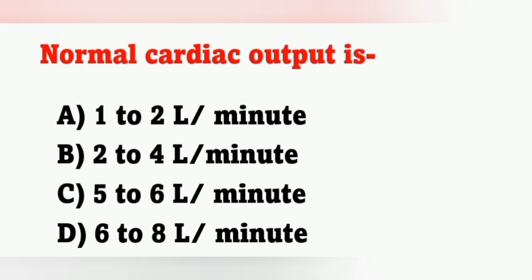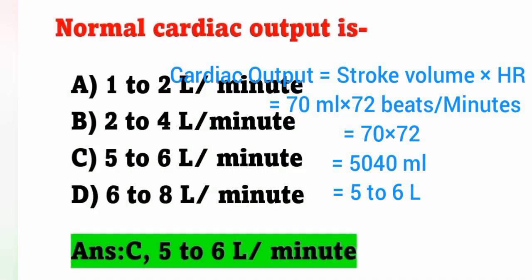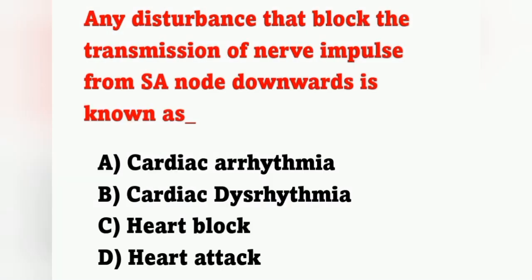Next question: normal cardiac output is? Options: A) 1-2 L/min, B) 2-4 L/min, C) 5-6 L/min, D) 6-8 L/min. Cardiac output equals stroke volume multiplied by heart rate. Normal stroke volume is 70 ml and heart rate is 72 beats per minute, giving approximately 5040 ml, which is approximately 5 to 6 liters. Option C is the correct answer.